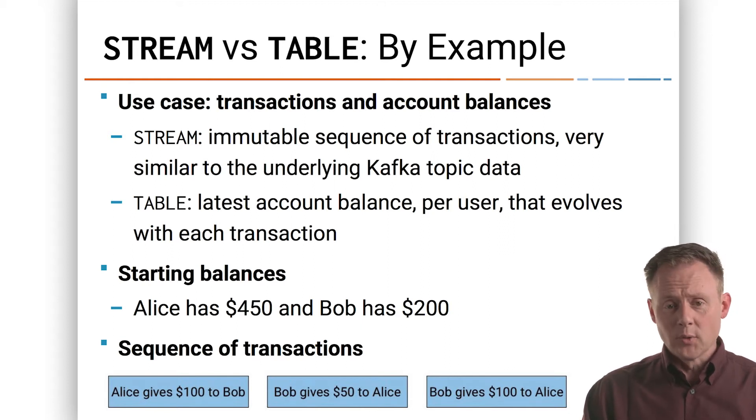Our initial conditions are that Alice has $450 and Bob has $200. That's where we're starting these accounts off at. There are three transactions that are going to happen. Alice is going to give $100 to Bob, Bob is going to give $50 to Alice, and then Bob is going to give $100 to Alice.